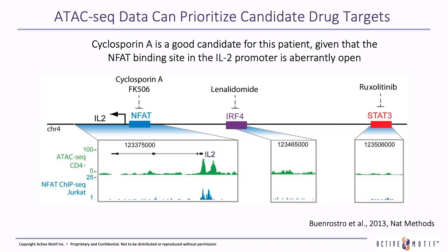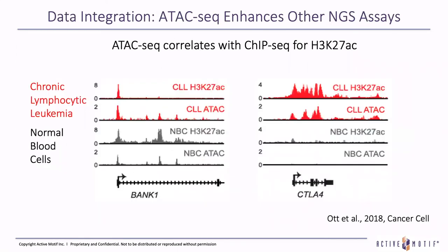Let's see more examples of ATAC-seq data integration. In this study, blood from chronic lymphocytic leukemia patients and normal donors were subjected to both ATAC-seq and ChIP-seq for acetylated H3K27 — the classic epigenetic mark of open and active chromatin. ATAC-seq, shown in the lower track, reveals that even though histone acetylation is lost in the patient, there's still open chromatin at the BANK1 locus. At the CTLA-4 locus, however, there is apparently open and acetylated chromatin that correlates in the patient sample versus the normal blood sample.